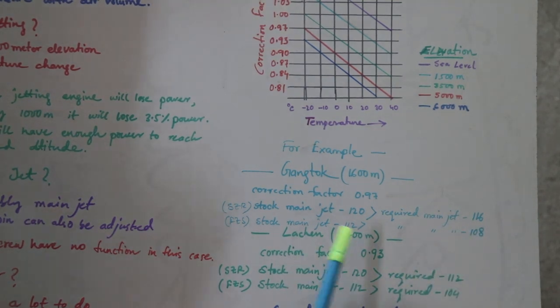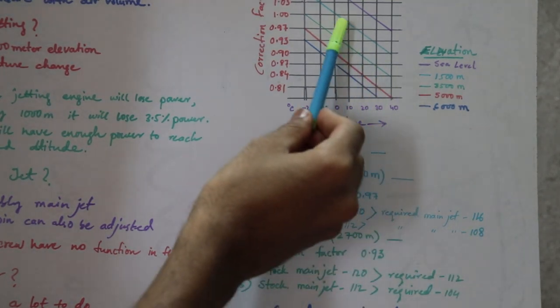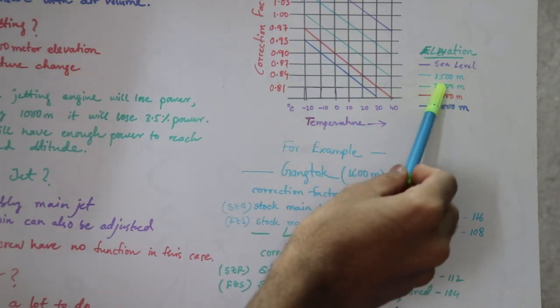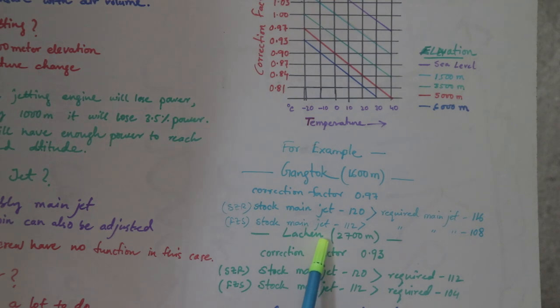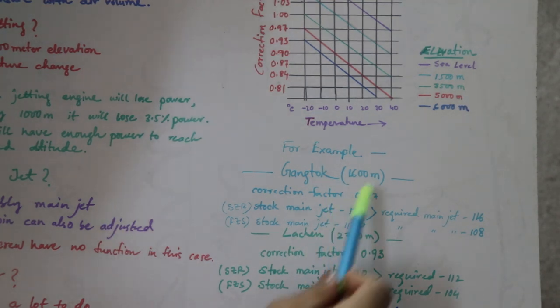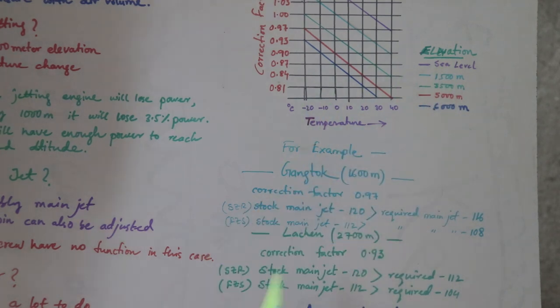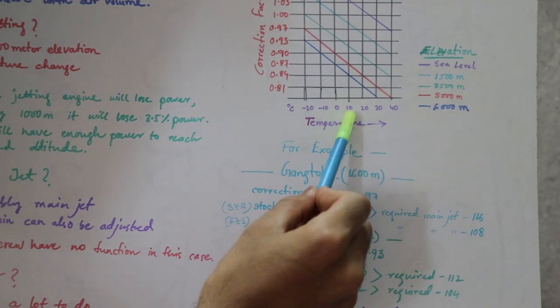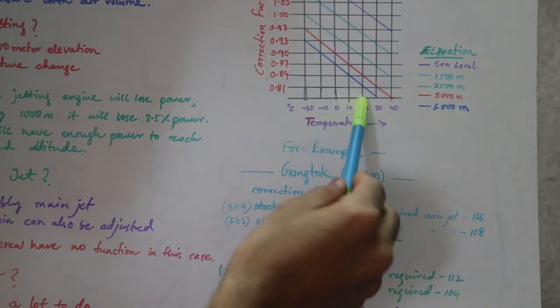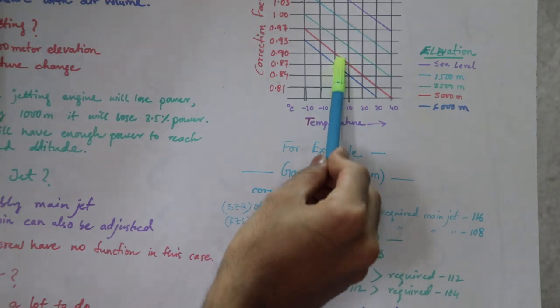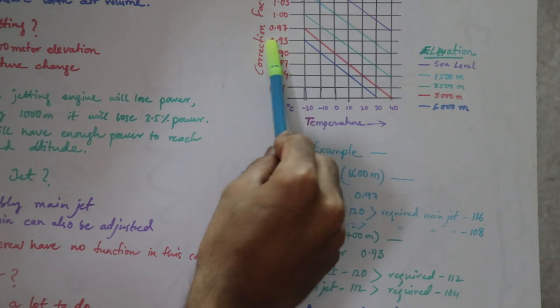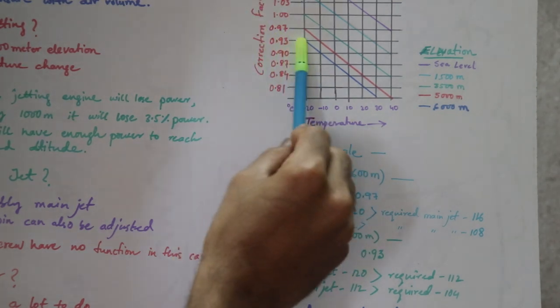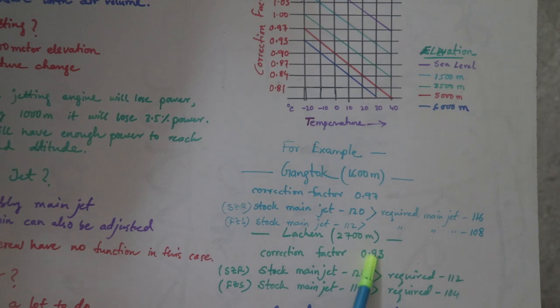In FZ the stock jet is 112, so I need to change it to 108. Now let's move on to the next line, 3,500 meter, the green line. I have considered this to be Lachen. Lachen is at 2,700 meter but I have considered this line. Let's consider this green line. In Lachen the temperature is around 0 to 10 degrees centigrade.